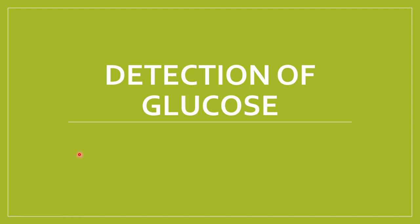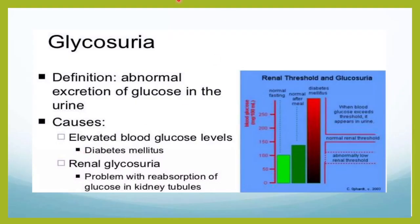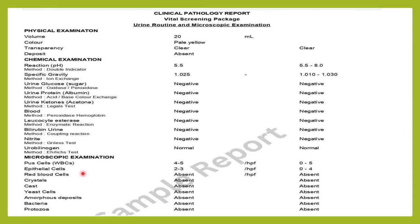Welcome to classes by Lab Doctor. In today's class we will see how to detect glucose in the urine. Glycosuria is the abnormal excretion of glucose in the urine. This could be because the glucose level is high in the blood as in diabetes, or the glucose level is normal but the kidneys are unable to reabsorb it, which is called renal glycosuria.